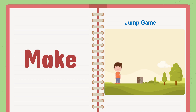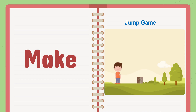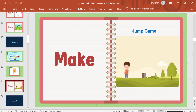Hello, peace and mercy be upon you. In today's video, we will make a jump game using block-based programming with mBlock — the same as Scratch, nothing will be changed. We will make this sprite, or this man, jump above a brick that moves from the right side of the screen to the left, and after it reaches the edge it will begin from the beginning again and again.